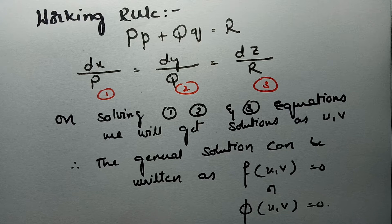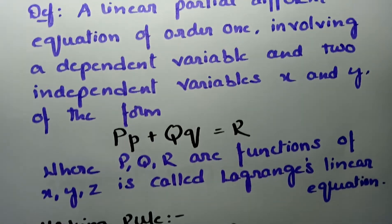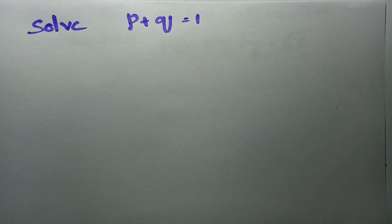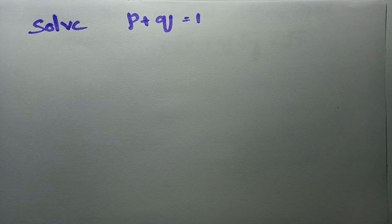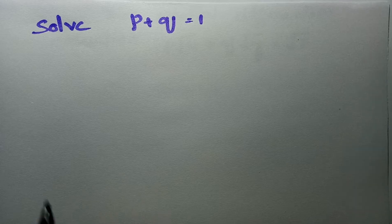This is one kind of solution. In my next video I will upload the second model — solving the Lagrange's linear equation using multipliers, so don't miss it. Now let's solve a few problems. The first problem is to solve the equation p + q = 1.